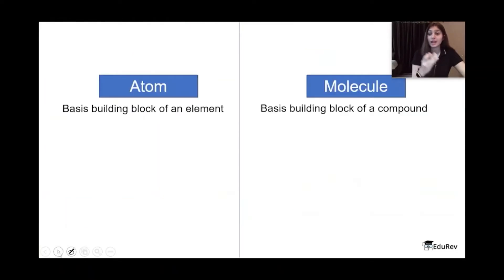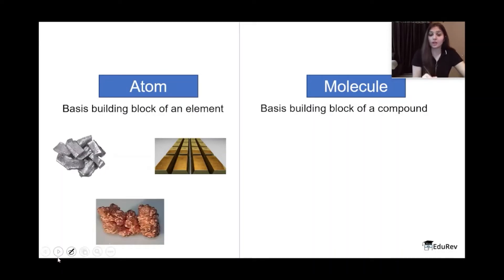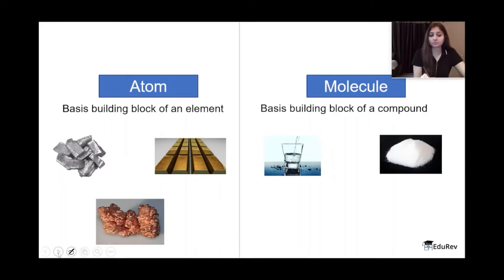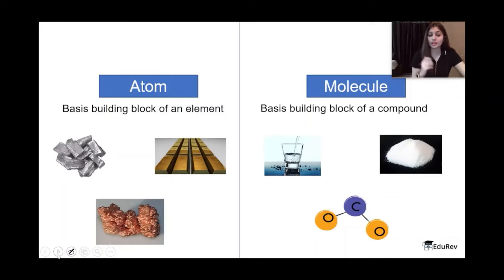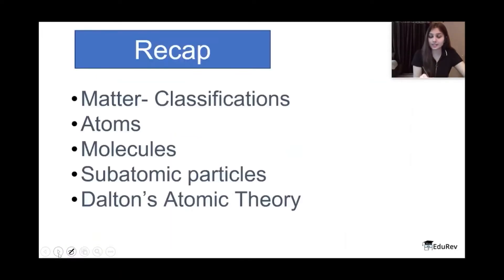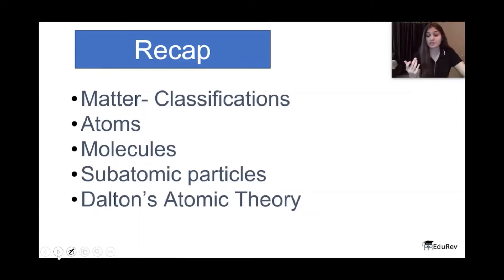To conclude: an atom is the basic building block of an element — elements could be mercury, gold, or copper. A molecule is the basic building block of a compound — a compound could be water, sodium fluoride, or CO₂, which is a molecule of C and two atoms of oxygen. So in summary, we've talked about matter and its classifications, what atoms and molecules are and how they differ, subatomic particles, and Dalton's Atomic Theory and its rejection.